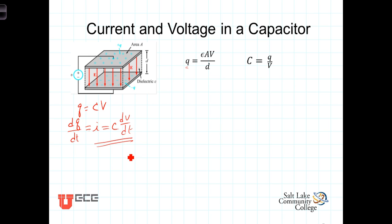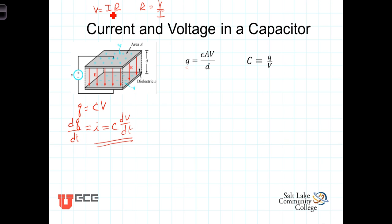Let's refer back to when life was simple with resistors. Ohm's law was V equals I times R, and we defined resistance as the ratio of voltage to current. In a resistor, there's a nice scaling — a directly proportional relationship between voltage and current. The voltage was directly proportional to the current.